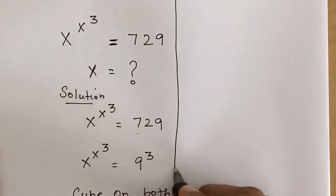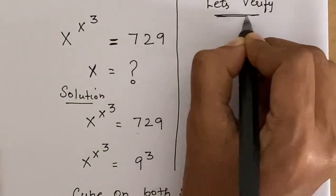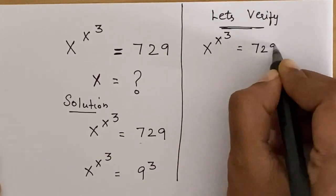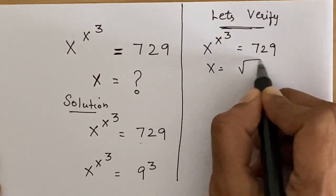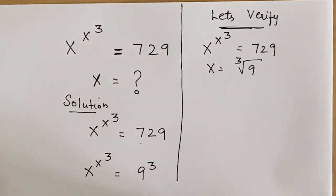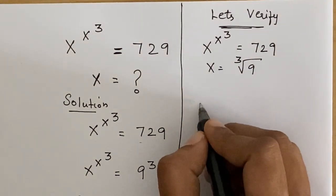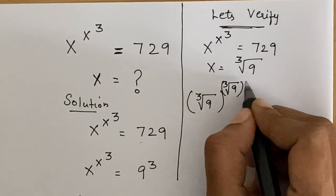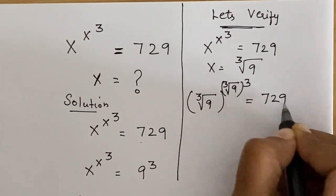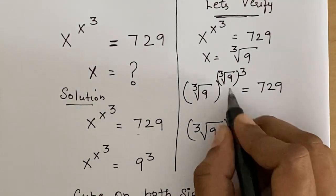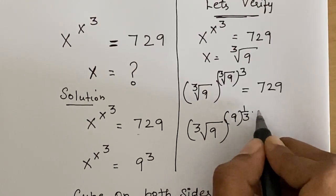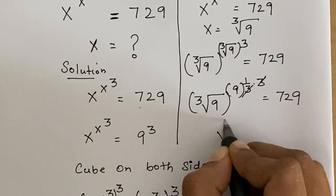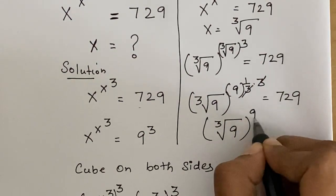Let us verify whether the value of x is correct for the given equation. The given equation is x to the power x cubed equals 729, and x equals cube root of 9. Substituting, we get cube root of 9 to the power (9 to the power 1/3) times 3 equals 729. Here 3 and 3 cancel out, giving us cube root of 9 to the power 9 equals 729.